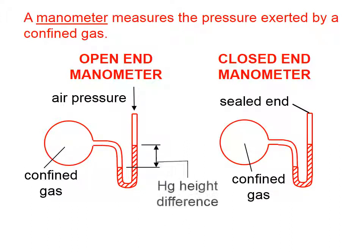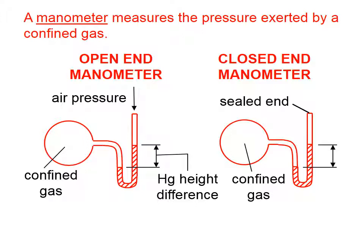The height of the liquid, typically it's mercury, but it doesn't have to be. That height difference is going to give us a relationship between the pressure of the confined gas and the air pressure, and we have a height difference in a closed-end manometer as well.